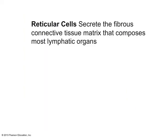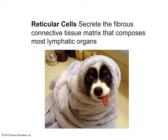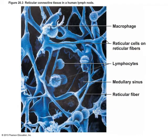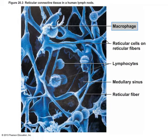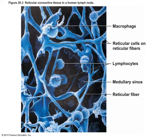The last type of cells found in lymphoid tissue are the reticular cells — fibroblasts that help to secrete the fibrous connective tissue matrix composing most lymphatic organs. This electron micrograph of lymphatic tissue shows the various reticular fibers secreted by reticular cells. Sitting on those fibers we have macrophages, which are important phagocytes, and also lymphocytes within the lumen of those fibers. Whereas macrophages eat all different types of bacteria, lymphocytes are specialized to certain types of bacteria, viruses, or infected body cells.